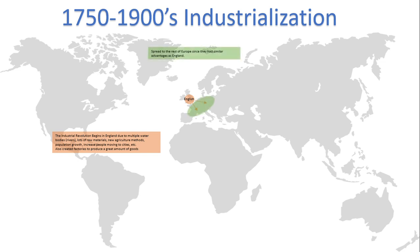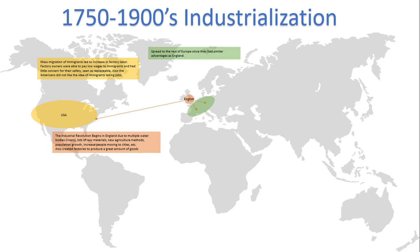Industrialization then spread to the rest of Europe because Europe had similar conditions and proximity to England. Next it moved to the USA, where mass migrations of immigrants from Europe, Asia, and Australia all led to an increase in factory labor. Factory owners were then able to pay lower wages to these immigrants and had little concern for their safety — they were seen as replaceable.